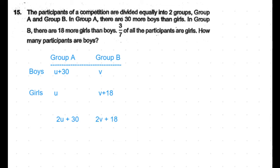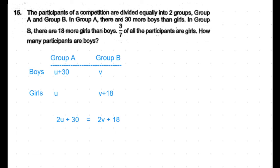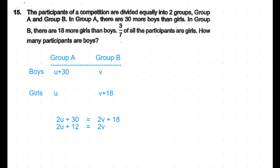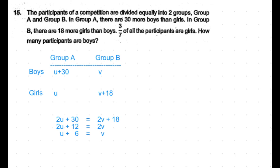The total number of participants in Group B is 2v + 18. But the question says the participants are equally divided into the two groups, which means 2u + 30 equals 2v + 18. Subtracting 18 from both sides gives 2u + 12 = 2v, and dividing by 2 gives u + 6 = v.